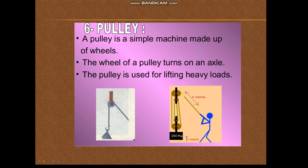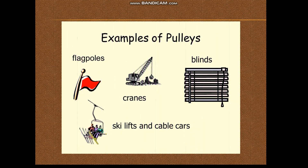The last simple machine is a pulley. It is a simple machine that has a grooved wheel and a rope running between the grooves of the wheel. It is used to lift heavy objects attached to one end of the rope. Drawing water from a well with the help of a pulley is an example. Flag poles, cranes, blinds, sky lifts, and cable cars are also examples of pulleys.